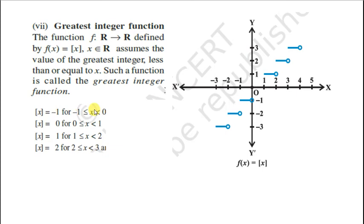Toh function ki value minus 1 hogi. Kyunki minus 1.5 ya minus 1.9 ya minus 1.1 ki immediate left mein jo integer hai. So immediate left mein jo integer hai, woh minus 2 hoga, toh us case mein is ki value minus 2 hogi. Aur agar yeh 0 aur minus 1 ki beech mein koi point hai, jaise minus 0.5, minus 0.9, minus 0.1, toh is ki left mein kaun sa integer hai, minus 1. Isliye function ki value kya hogi, minus 1 hogi.